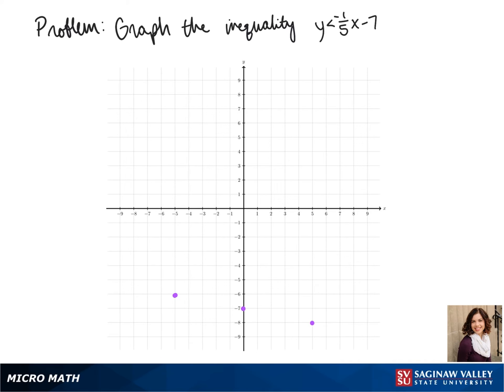And now to connect our points, we have to use a dashed line because our inequality is less than instead of less than or equal to. We shade underneath because y is less than the line negative one-fifth x minus 7.